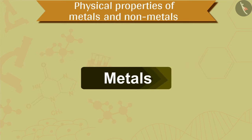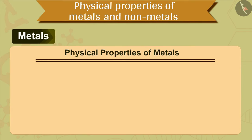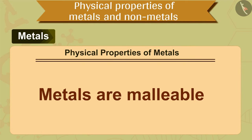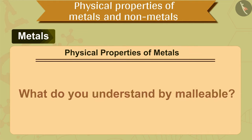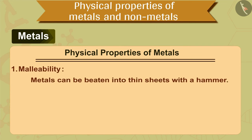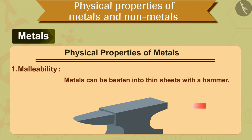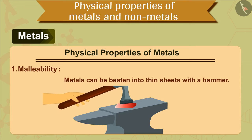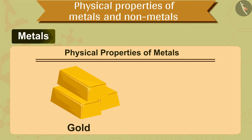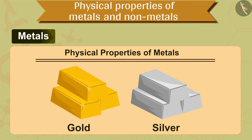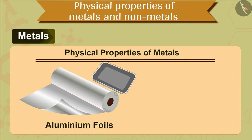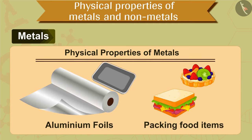First we will discuss about metals. The first physical property of metals is that metals are malleable. What do you understand by malleable? It means that metals can be beaten into thin sheets with a hammer without breaking. Gold and silver are the best malleable metals. Aluminum foils are used for packing food items because aluminum is malleable and can be converted into thin sheets.